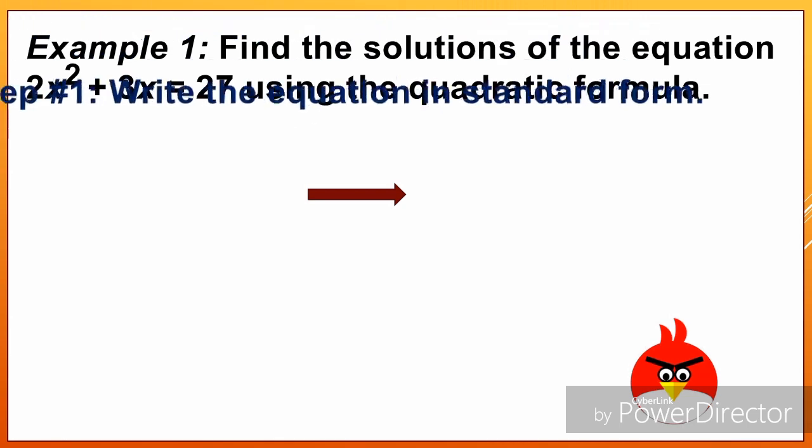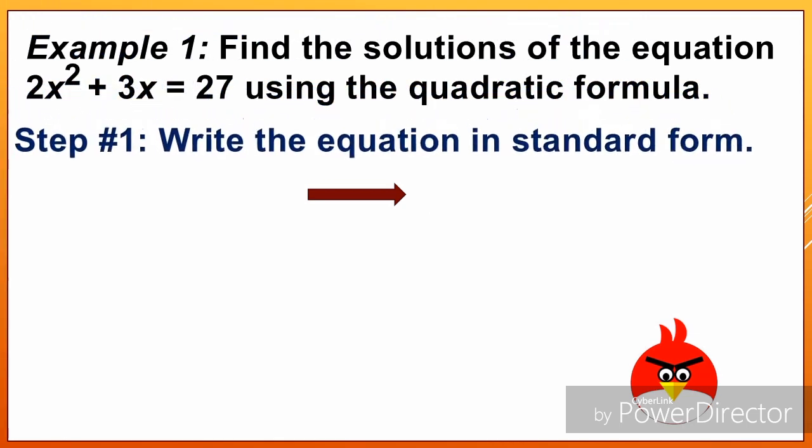Let's have example number 1: Find the solutions of the equation 2x squared plus 3x equals 27 using the quadratic formula.